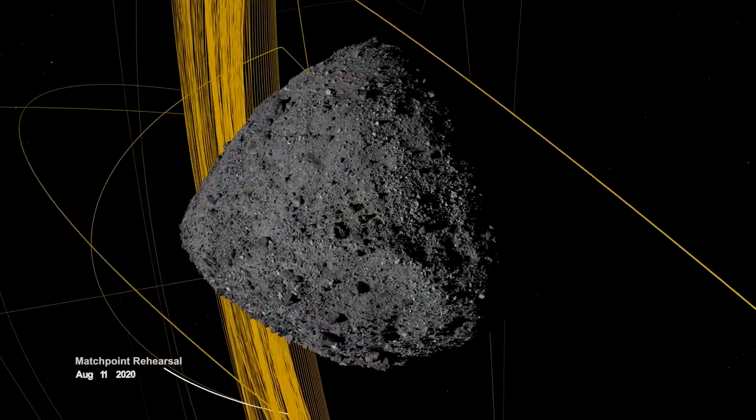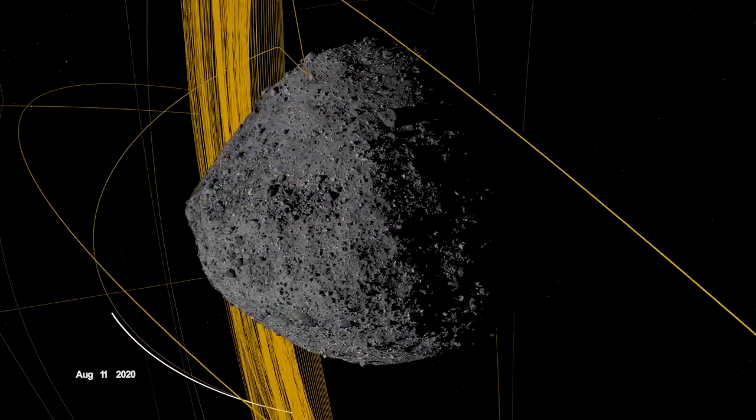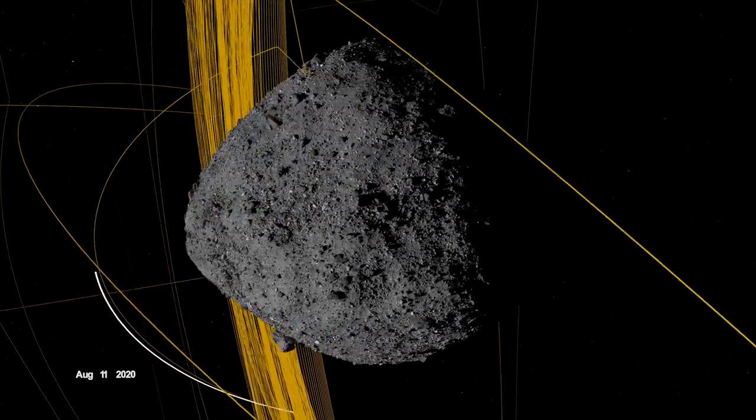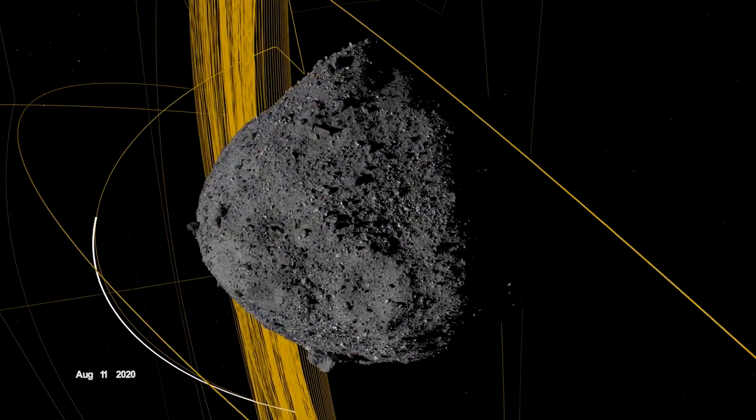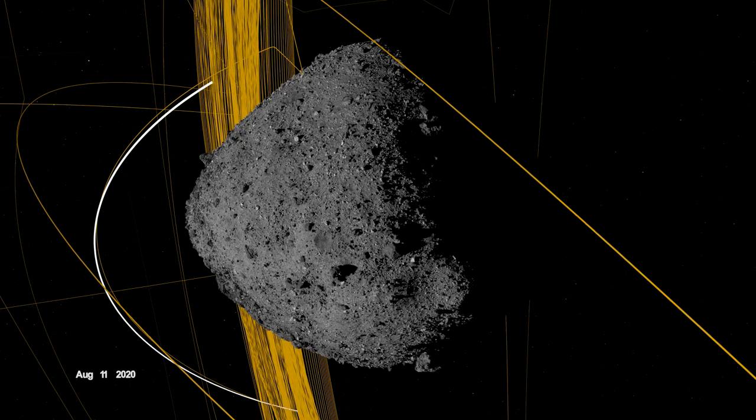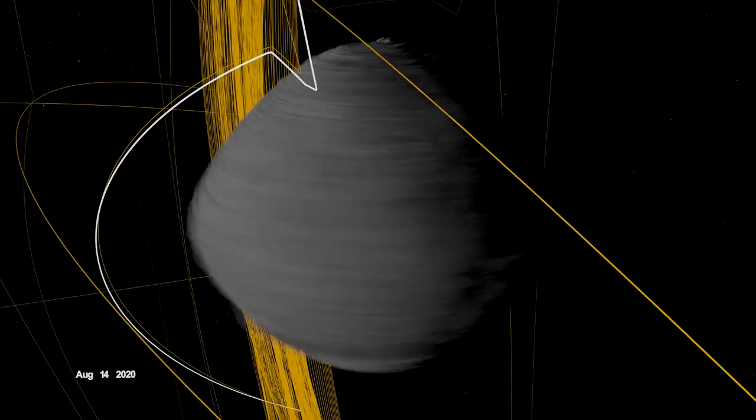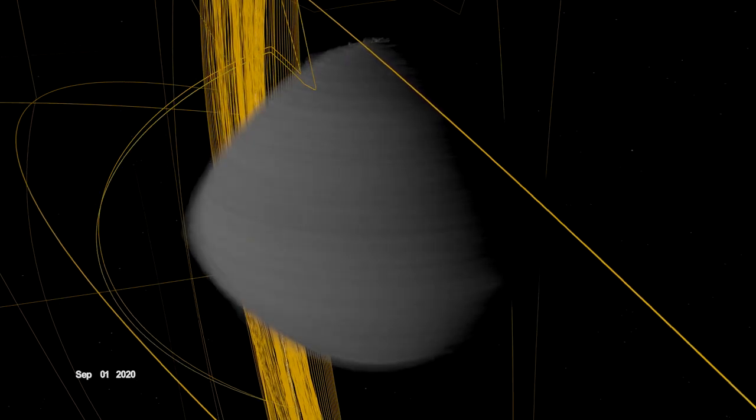On August 11th, OSIRIS-REx departed its home orbit and made a four-hour traverse to Bennu's northern hemisphere, retracing its earlier path. After performing the checkpoint engine burn to begin its descent, it made a second engine burn called Matchpoint to match Bennu's rotation before backing away at an altitude of approximately 40 meters.